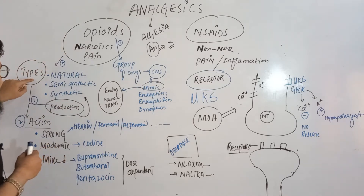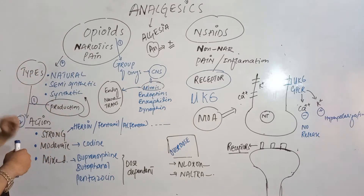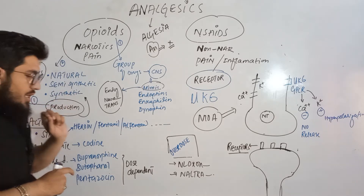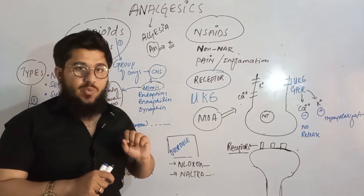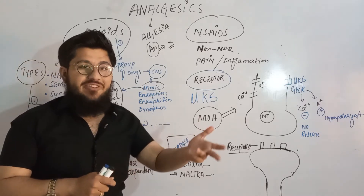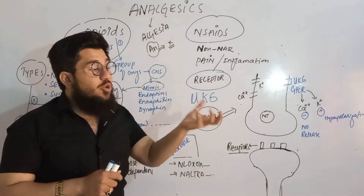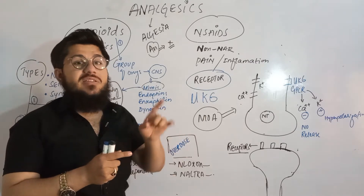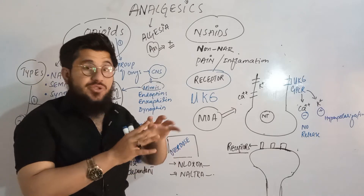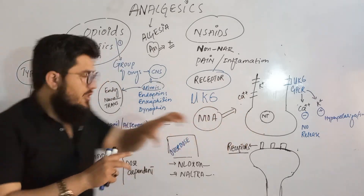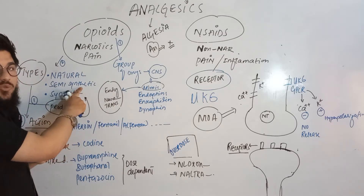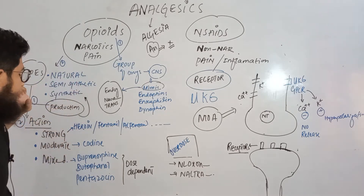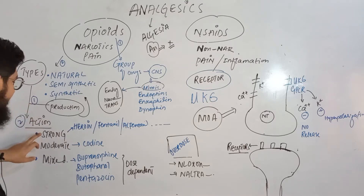Opioids are classified on the basis of production: naturally obtained, semi-synthetic, and synthetic. Those obtained from natural sources come from the plant Papaver somniferum. Naturally obtained drugs that are further chemically modified are called semi-synthetic. Those prepared without any plant source are called synthetic — man-made drugs.